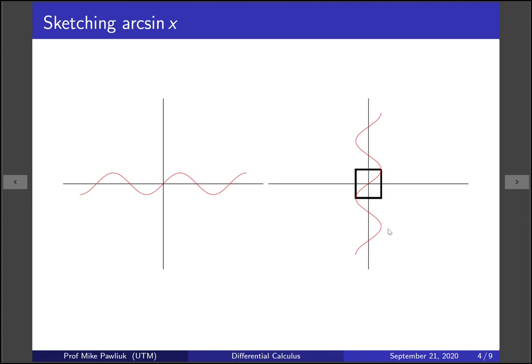But this one is nice because this branch goes through the origin. So if this is our goal, what domain do we need to restrict over here to get this box? Well it's actually very similar. It's this box right here.